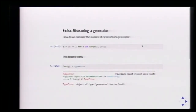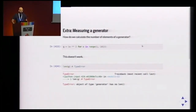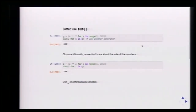For extra points, how do we measure a generator? We can't call len() — it's going to say TypeError. We could cast it to a list and then call len(), but that builds everything into memory. Better, we can use sum() — add one for each element in the generator, exhausting it to count. As convention, we use underscore as a throwaway variable to signal we don't care about the actual value.